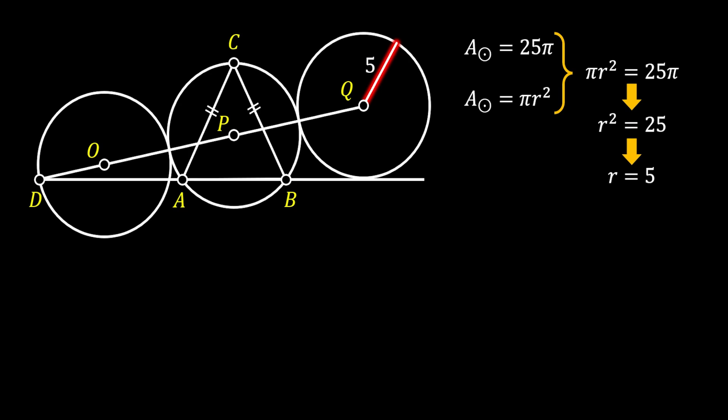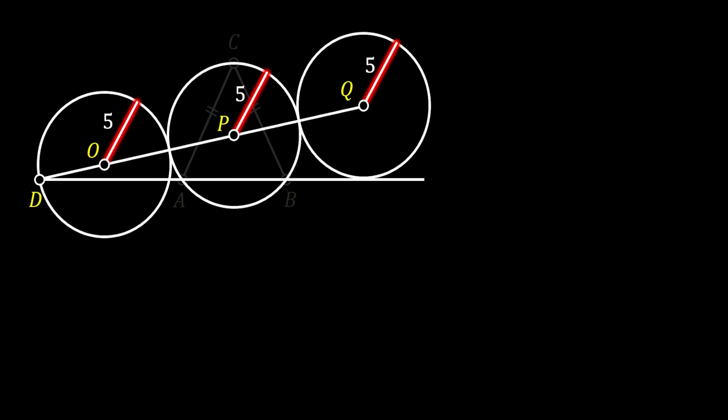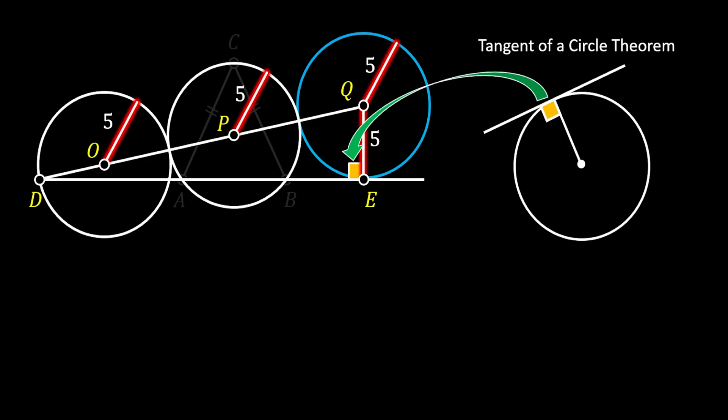Of course, since all three circles are equal, this means that the radius of the other two circles is also 5. Now, let's have a look at the circle on the right, and let's rotate our radius vertically to the tangent of our circle. We can label this point as E. We know that the angle at the point E must be the right angle. We know this by using tangent of a circle theorem, which states that if we pull a radius to the point of tangency, the radius will always be perpendicular to the tangent line.